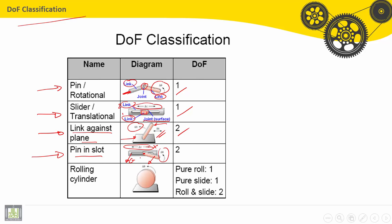Finally, we have a rolling cylinder. So this cylinder can make delta theta according to the plane fixed to the ground. So we have a pure roll. This is 1 degree of freedom. And we have pure slide, x or y. This is also 1 degree of freedom. In total, we find 2 degrees of freedom: roll and slide.